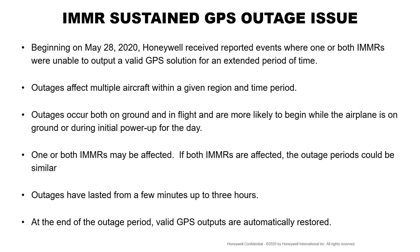Since May 28th, Honeywell received reports from airline operators wherein one or both IMMRs were unable to output a valid GPS solution for an extended period of time. These outages were occurring in different regions at different time periods, occurring both on ground and in flight. Most of the reports have been during initial power-up of the day, and either one or both IMMRs could be affected by this issue.